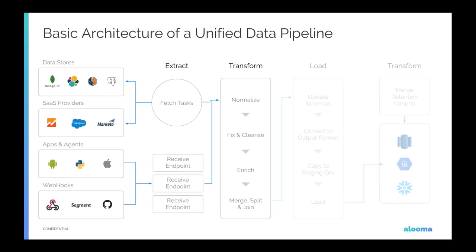Once you've extracted the data, you need to normalize it because it's coming in different formats from all these sources. Then you perform transformations — for example, parsing a user agent string into multiple fields, truncating strings that are too long, or cleaning up timestamps. Beyond basic cleansing, you might want to enrich the data before loading it. Many customers have IP addresses in their SDK data and want to enrich those with geolocation — adding country, country code, zip code — data that wasn't in the original event.